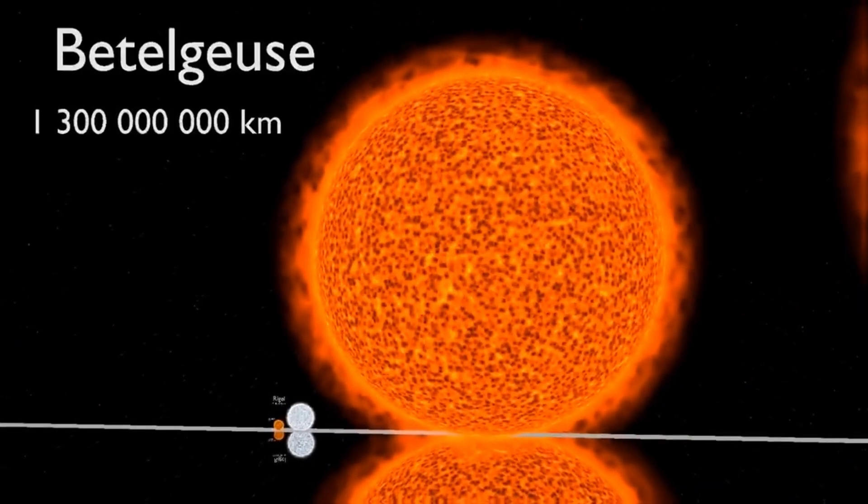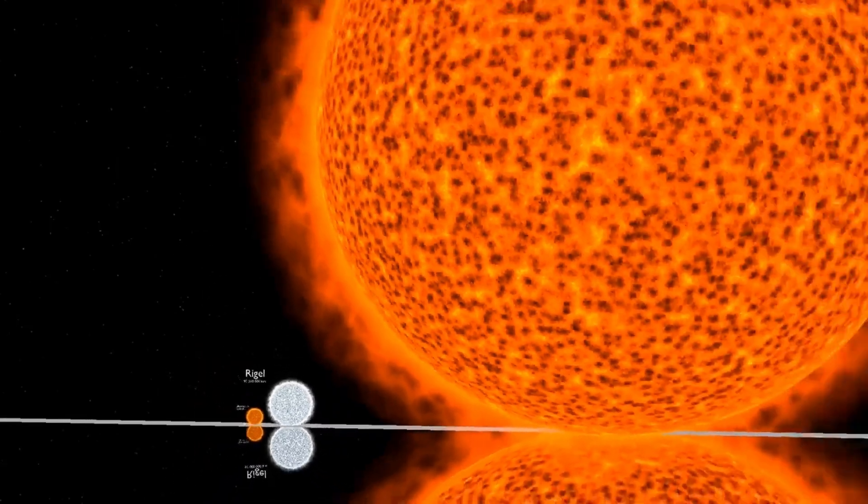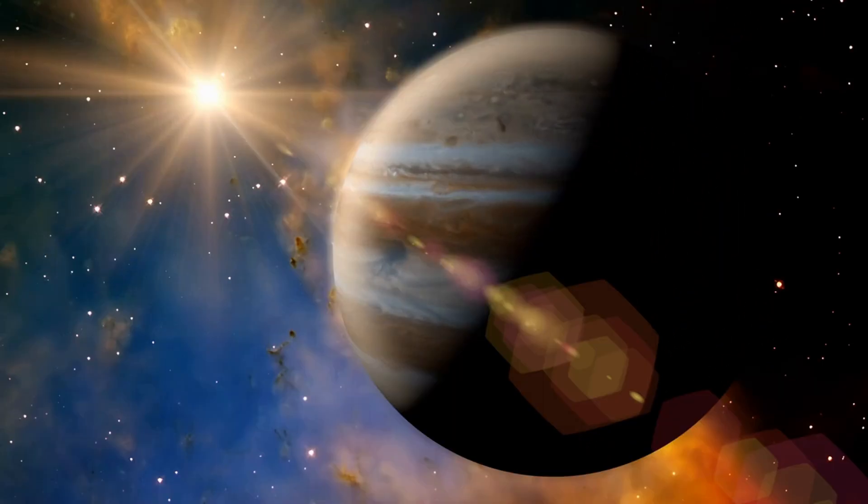Moving on, we have Betelgeuse, which is a red supergiant star. Its diameter is about 900 times larger than the sun's. If it were located at the center of our solar system, its surface would extend beyond the asteroid belt and reach right up to Jupiter's doorstep. However, Betelgeuse is also big but not heavy, with a mass of only 14 to 20 times that of the sun.